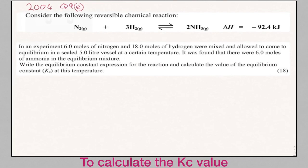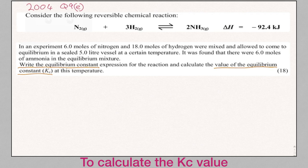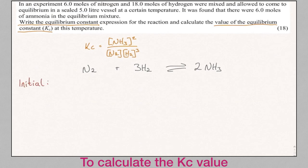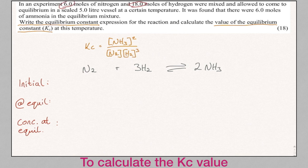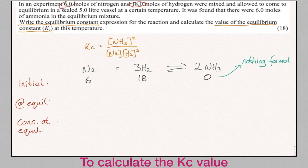You are asked to write the equilibrium constant expression and then to calculate the value of the equilibrium constant. It is good practice to highlight or underline what the question is asking you, especially as there is a lot of writing and it is very easy to make a mistake. Write down the equilibrium constant expression using the chemical reaction, paying particular attention to the number of molecules and putting them as a power in the expression. Step 1: rewrite the chemical equilibrium at the top centre of the page. Step 2: write down initial, at equilibrium, and concentration at equilibrium. Step 3: fill in the initial data — highlight the moles provided. For example, there are 6 moles of nitrogen and 18 moles of hydrogen. The product is always 0 for initial because the reactants have not yet reacted.